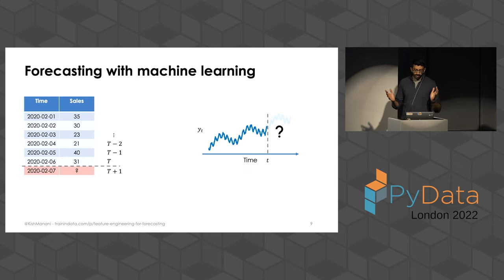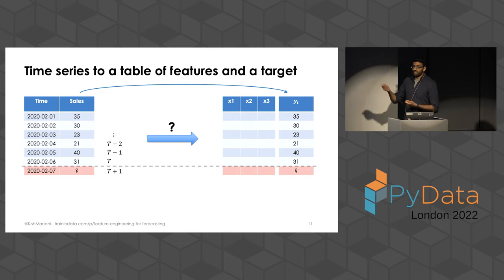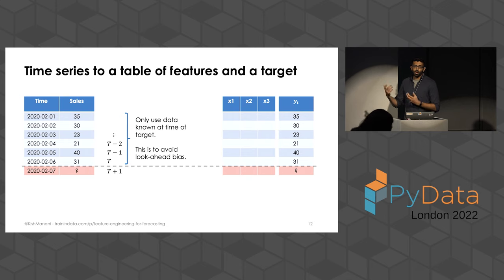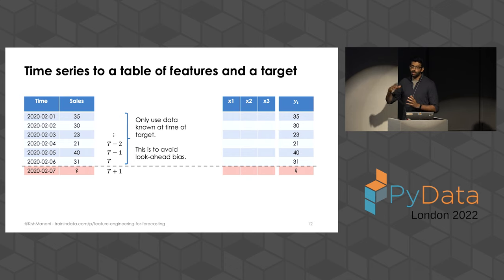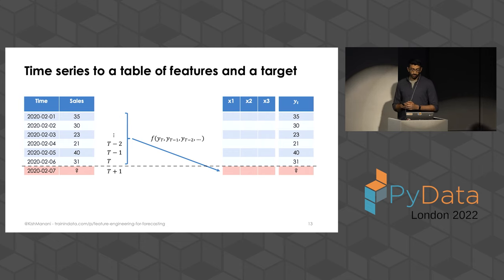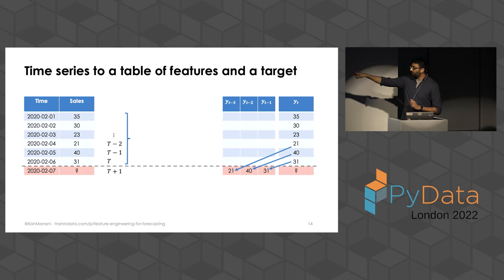So how do we do forecasting with machine learning? Let's say we start off with our time series and we want to predict T plus one, given that we're currently sat at time T. We want to create a table of features and a target variable. As the target variable, you just directly use the sales. The features we want to create are from the past values of the target variable, because you want to use the values in the past to predict the future. What you must do is only use data that you actually know at the time of the target — otherwise, you can leak data from the future into the past. The simplest things you can do are directly use the previous values: if you're sat at T and want to predict T plus one, use the value at T, T minus one, and so on. These are called lag features.